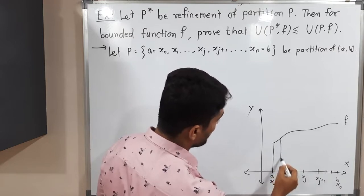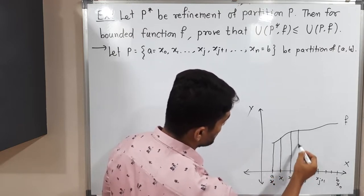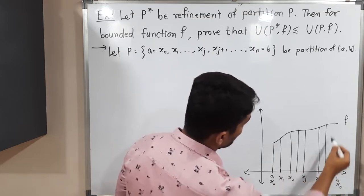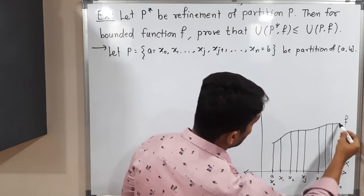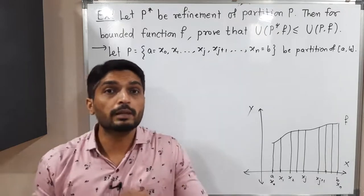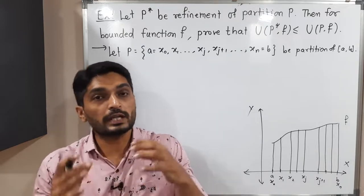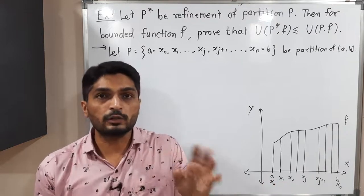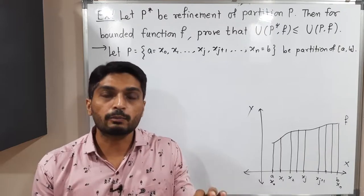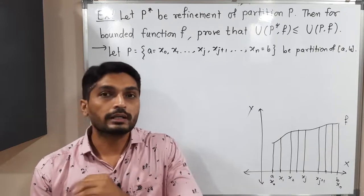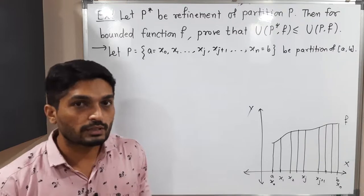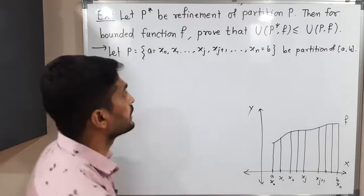Because of this partition, the region will be divided into parts. Let me draw this partition. Now, to take partition P*, which is a refinement of P, instead of taking two or three additional points, I will take a single additional point. What is true for that single point will be true for remaining points also. So the logic will be the same for adding more points.